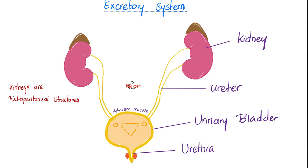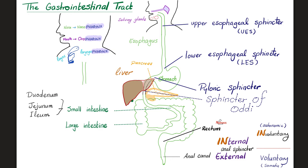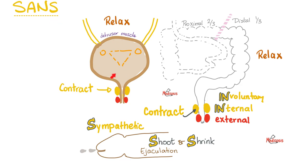If it's rest-and-digest, parasympathetic — I'm resting, digesting, I'm in the toilet — so I'm going to squeeze my bladder and contract that muscle. Parasympathetic will contract the detrusor muscle but will relax the urethral sphincter. Sympathetic is fight-or-flight: when I'm running from a tiger, I don't have time to go to the bathroom. Therefore, relax the wall of the bladder but contract that sphincter to keep the urine in. Just like in the anal canal, we have an internal sphincter (involuntary, under autonomic control) and an external sphincter (under somatic control). Sympathetic contracts the internal sphincter to hold urine in; parasympathetic relaxes it to let urine out.